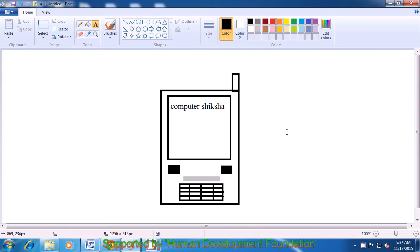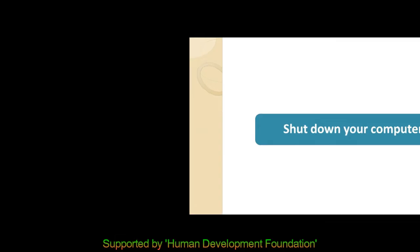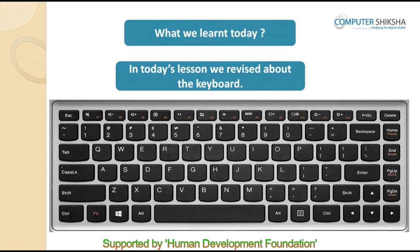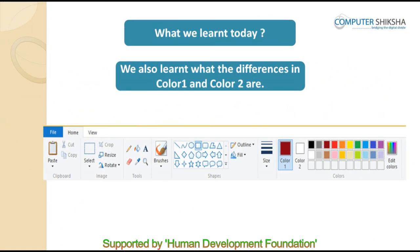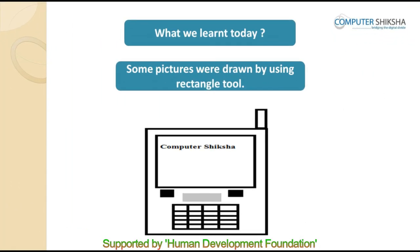To erase this picture, you will again use Ctrl A plus Delete. We will end today's lesson here. Close the MS Paint file properly, then properly shut down the computer. In today's lesson, we revised about the keyboard, learned about the rectangle tool and used it to make some drawings. We also learned the differences between color 1 and color 2, and learned about fill and where and how it is used. Thank you.